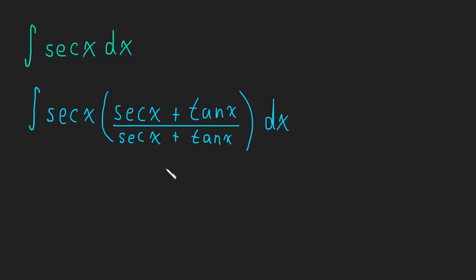And that's a nifty little trick, because watch what this simplifies to. This is secant squared x plus secant x tangent x, divided by secant x plus tangent x.